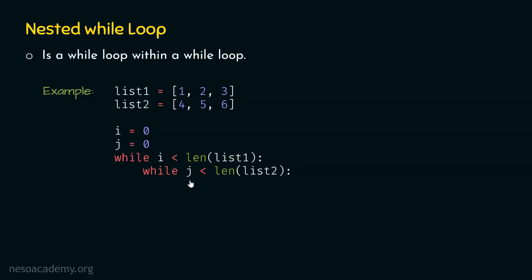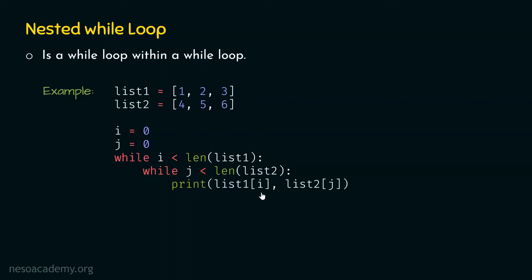Now we can print these items. We first want to print one four. We use the print statement: print list_one[i], list_two[j]. The comma operator adds a space between them. Since i is zero, list_one[0] gives us one; and since j is zero, list_two[0] gives us four. So at run time, one and four will be printed on the screen. After this, j must be incremented by one so that we can move to the next item in list two, which is five.